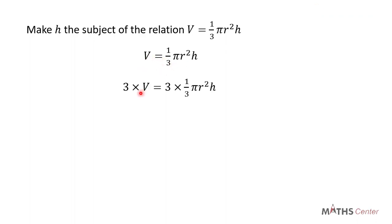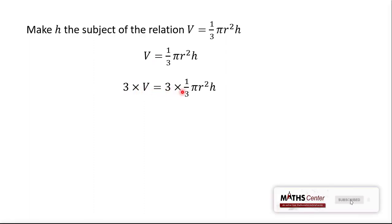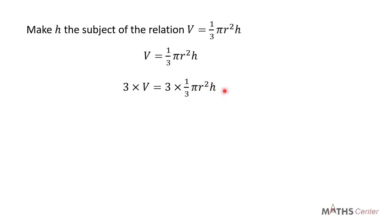When I do that, I'm going to have 3×V = 3×(1/3)πr²h. 3 and 3 will cancel each other out. 3 times V will give us 3V and this will be equal to πr²h.